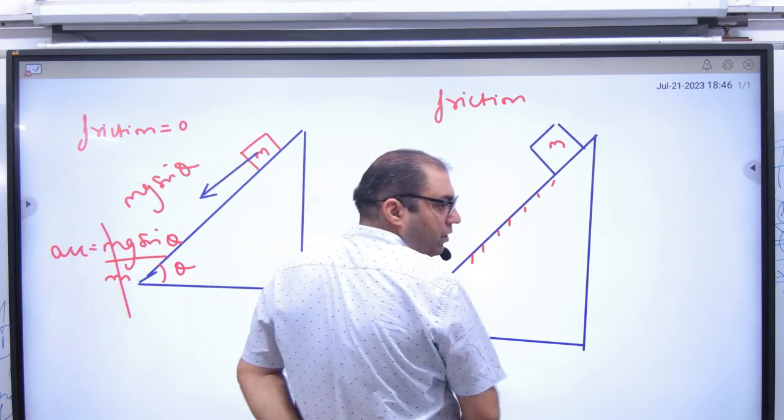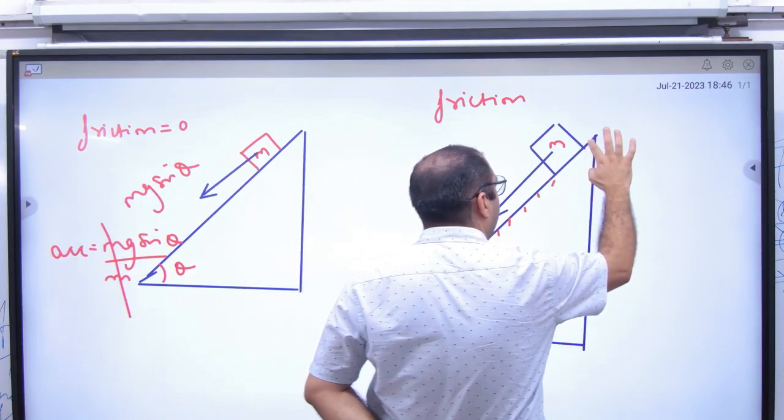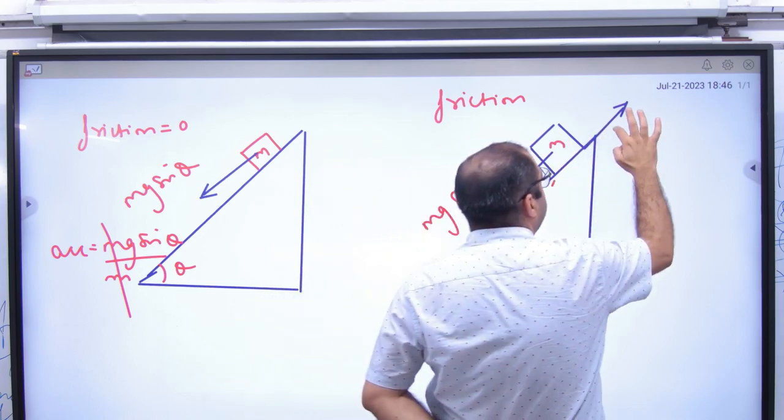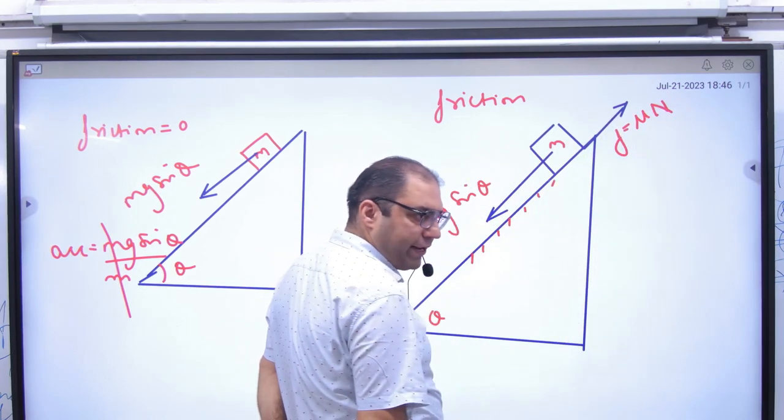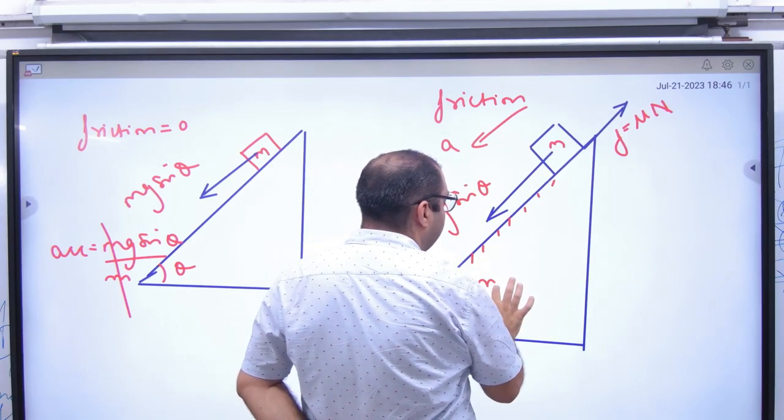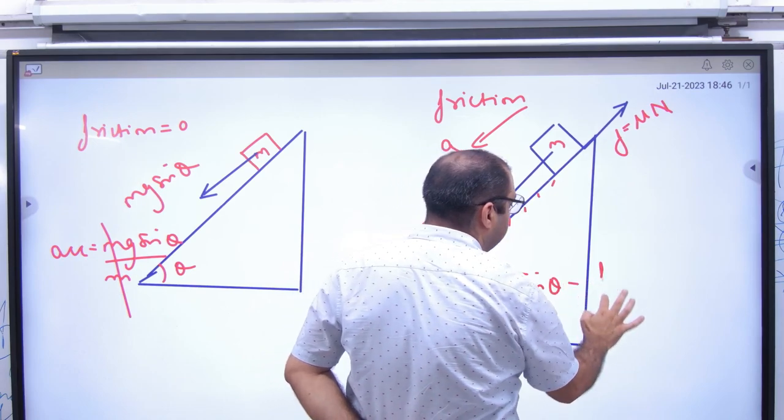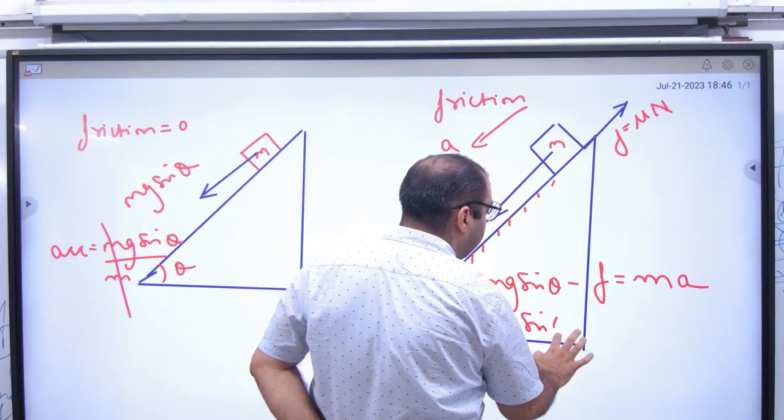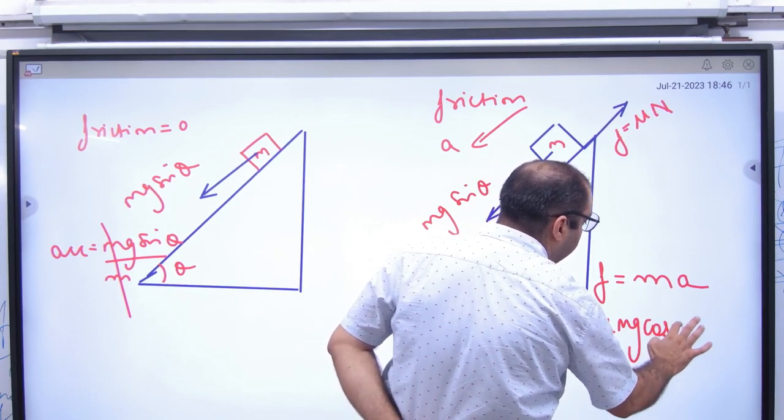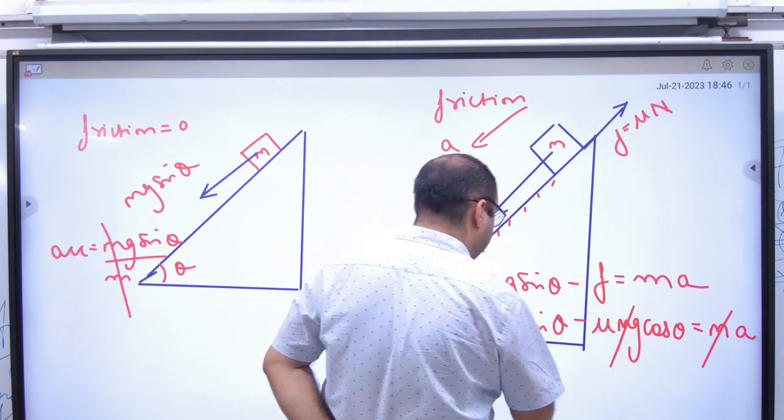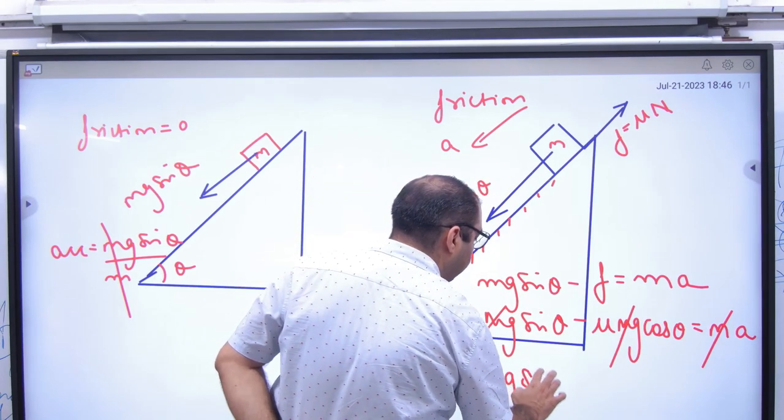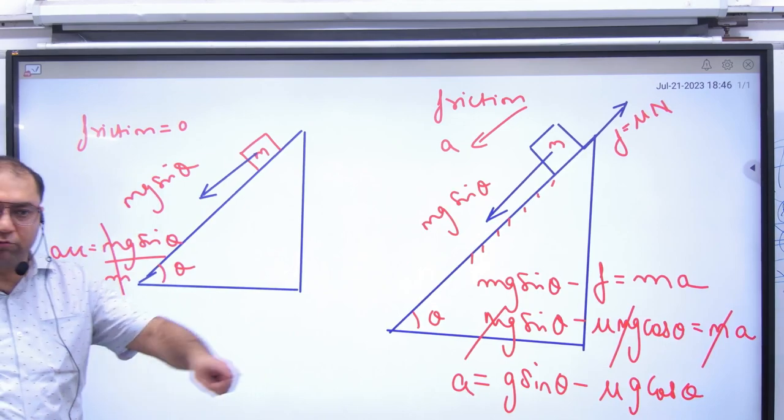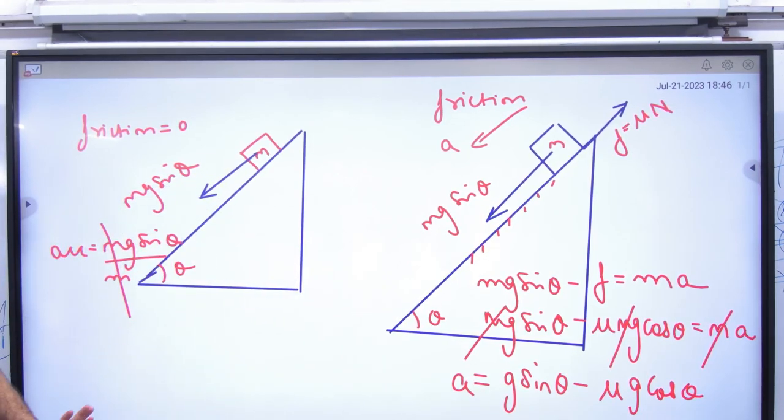But if there is friction, then one force will act downward. Downward force kya hai? Mg sin theta. And upward force of friction kya hogi? Mu times normal reaction. And if it's coming down with acceleration A, then Mg sin theta minus force of friction is mass into acceleration. Or Mg sin theta minus mu times Mg cos theta is mass into acceleration. So acceleration will be G sin theta minus mu g cos theta. With friction that acceleration. Without friction this acceleration.